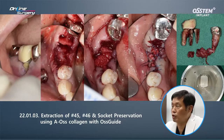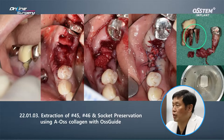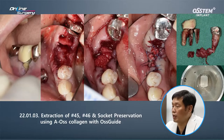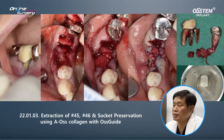After extraction, there was granulation tissue and fractured root. AOS collagen was used and irrigated first before being used for socket preservation.